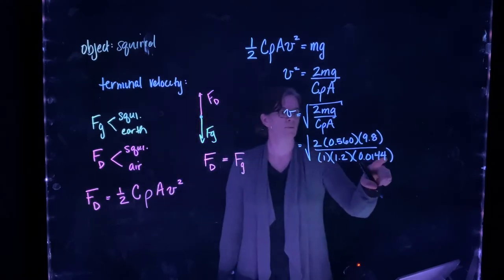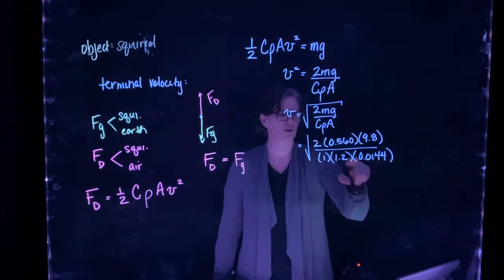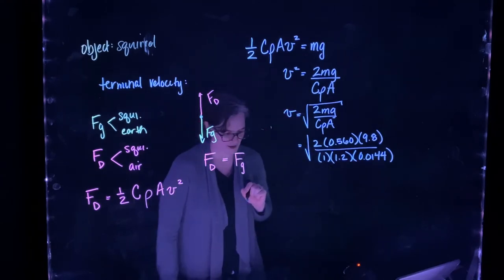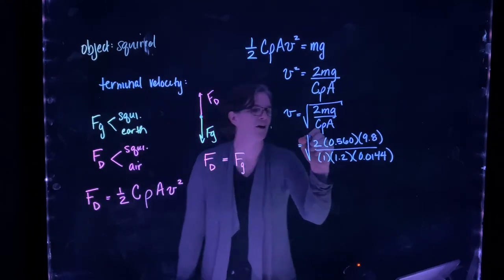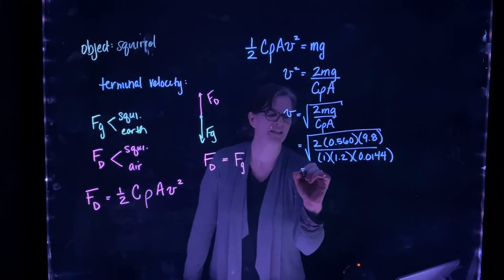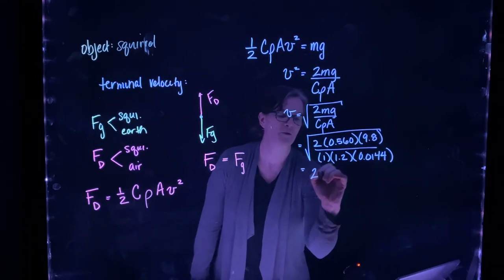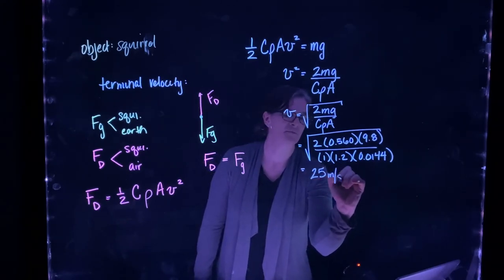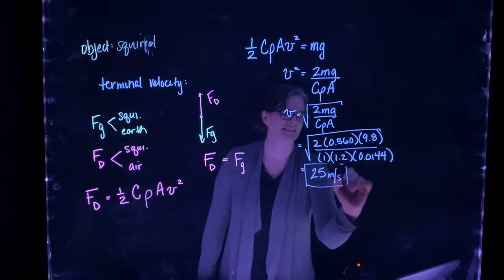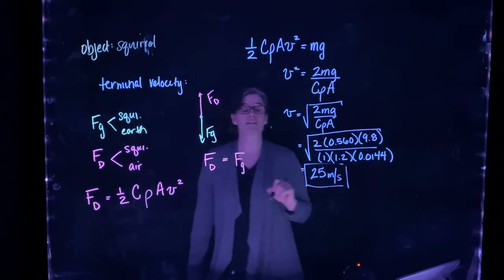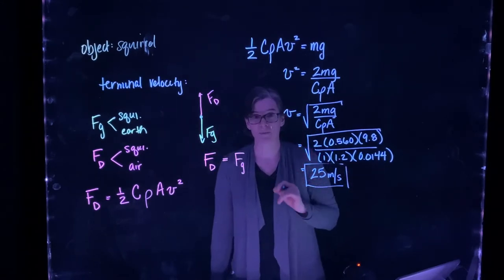So just as a reminder, 1, 2, two divisions by 100 there. So if I take all of that under the square root, I get a terminal velocity of about 25 meters per second.